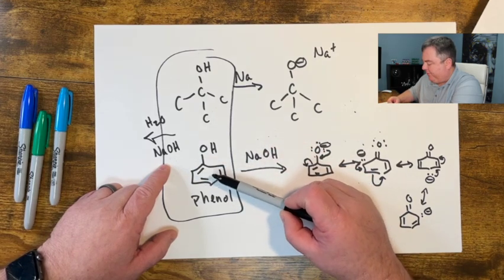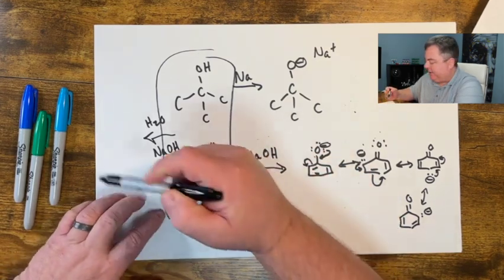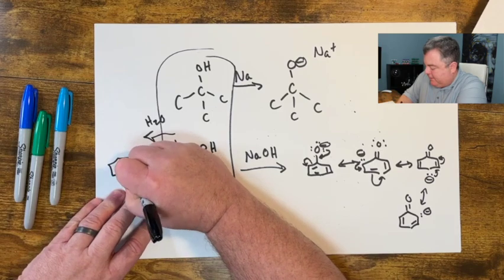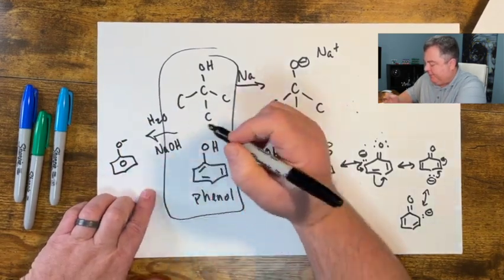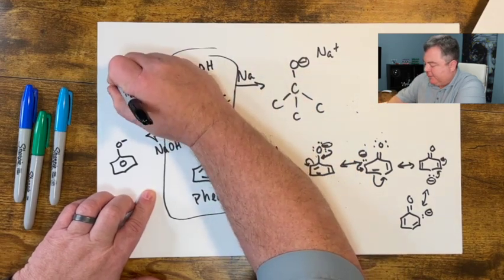But this one, of course, being more acidic, can react with it. So you get O minus because of this one reacting with the sodium hydroxide and this one stays neutral.